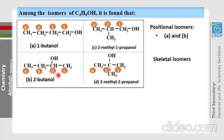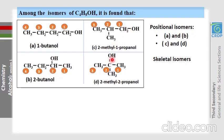Now it's your turn — find another pair of positional isomers. Molecules C and D have the same carbon chain, with OH on carbon 1 in C and carbon 2 in D. They are identical except for the position of the OH group, so C and D are positional isomers.